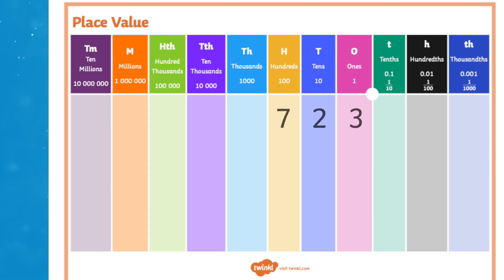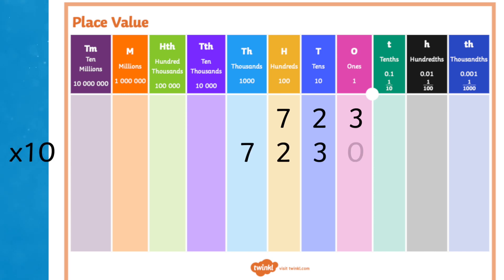Are your children learning how to multiply and divide by 10, 100, and 1000? Let's have a look at how they can do this and some fabulous resources which you can use to help them in their learning. Looking at a place value mat, we can see that when we multiply by 10, the numbers move one column to the left, and we need to put a 0 in as a placeholder in our 1s column.